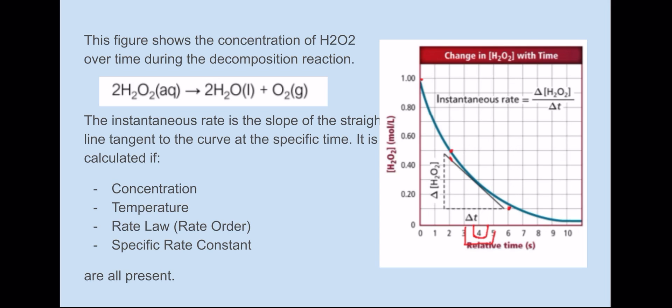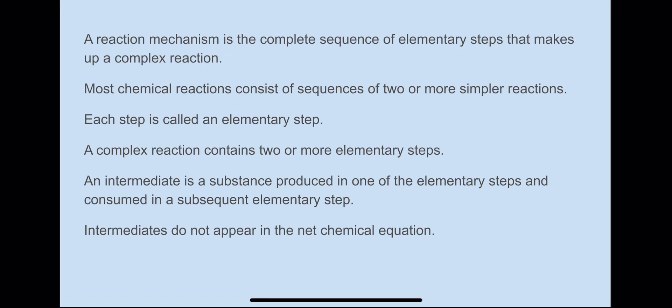A reaction mechanism is the complete sequence of elementary steps that make up a complex reaction. You might know that hydrogen and oxygen combine to make H2O or water. This is one step, it's just a combination of these two that makes the product. It doesn't require more than one step. This step is called an elementary step. When you have more than one that makes up a reaction, it's called a complex reaction.